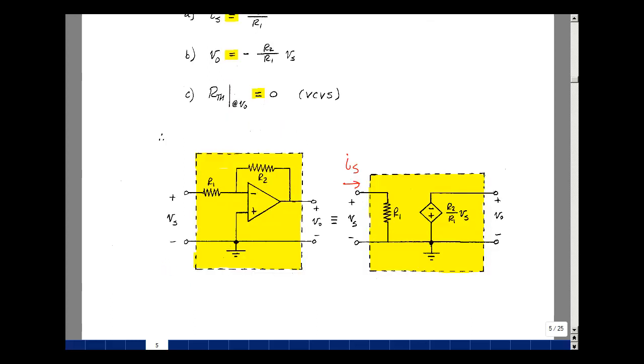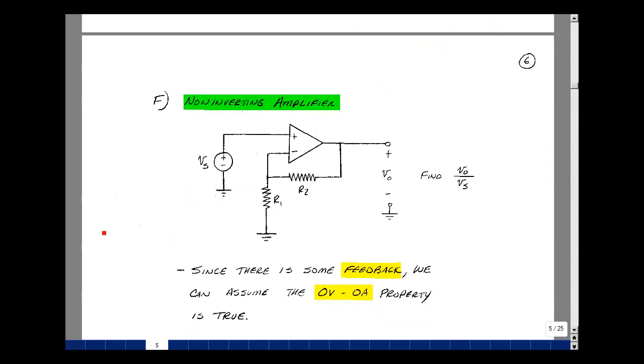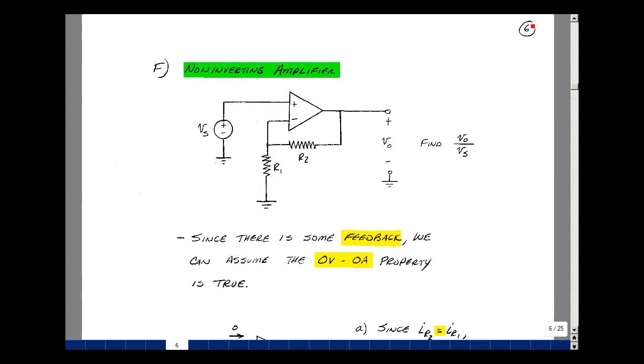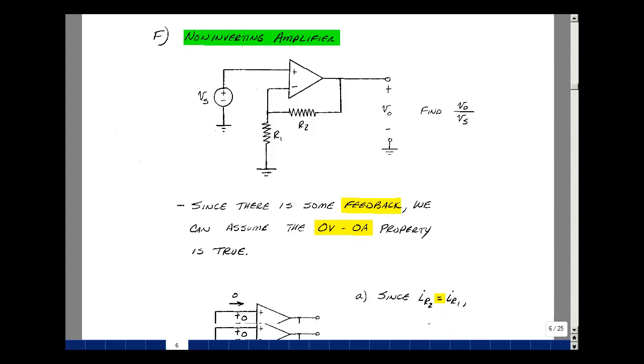What's shown here is a non-inverting amplifier from ECE 201, where I've got, again, a feedback between the output and the input terminals of the op-amp. We can use our zero volt zero current property to say that the voltage across these terminals is driven to zero. Again, the current is zero because it's a high resistance. So let's apply that to the schematic and let's analyze the circuit.